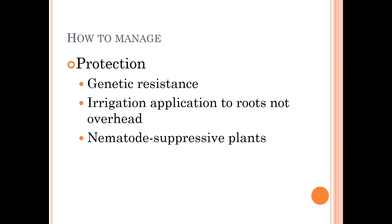Finally, protection: some plants are genetically resistant and some are tolerant. You want to irrigate to the roots rather than overhead, because nematodes can spread through water. And as mentioned, nematode-suppressive plants are another option.